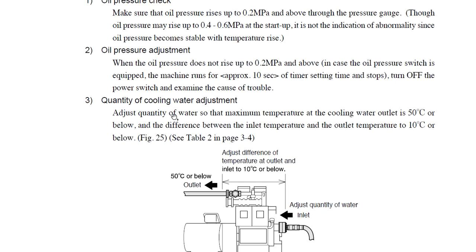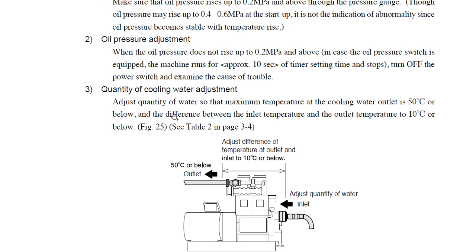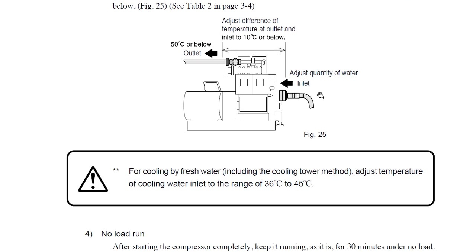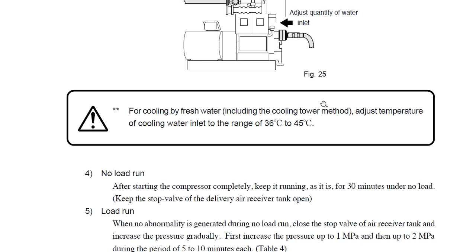Next, we will check that the quantity of cooling water adjustment is proper. Adjust the quantity of water so the maximum temperature at the cooling water outlet is 50 degrees Celsius or below, and the difference between the inlet temperature and the outlet is 10 degrees or below. We have seen the table and spoken about that.